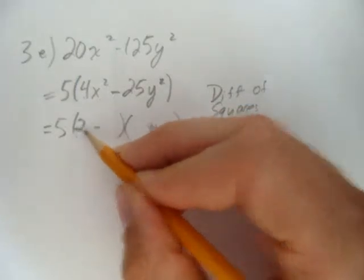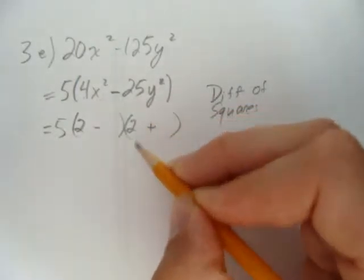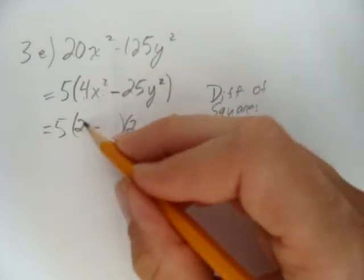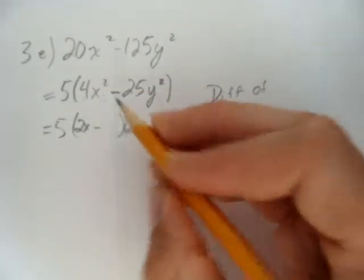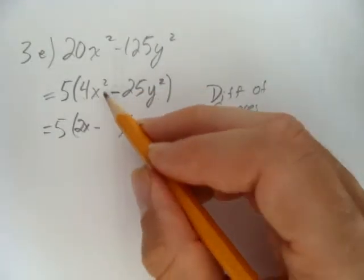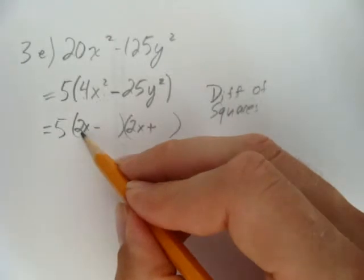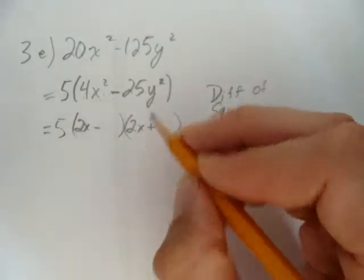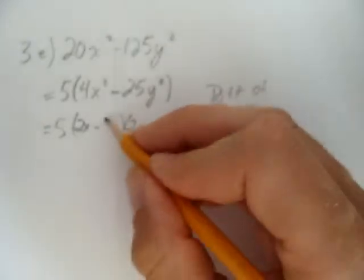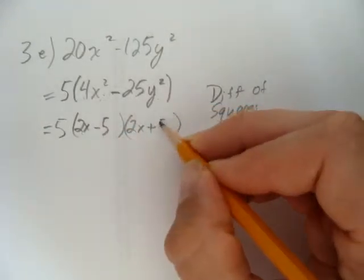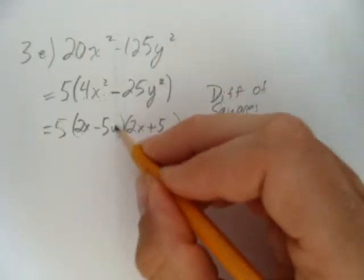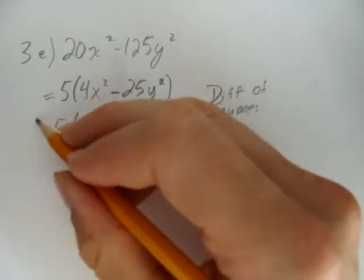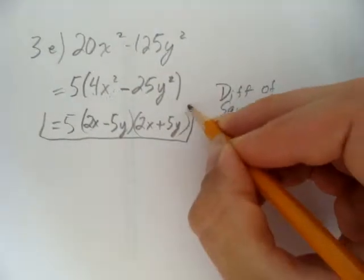What's the square root of 4? 2. Put a 2 in both sides. What's the square root of x squared? What times what makes x squared? x. In other words, 4x squared is made up of 2x and 2x. Let's do the same to 25y squared. What's the square root of 25? 5. What's the square root of y squared? y. And that is actually your answer — you're done.